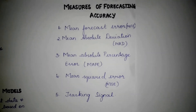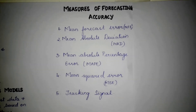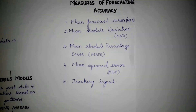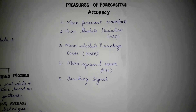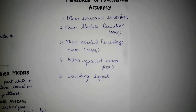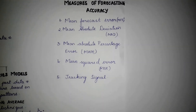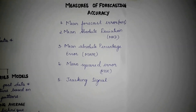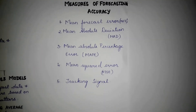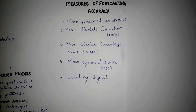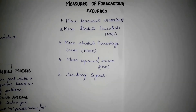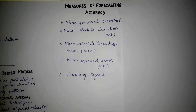Measures of forecasting accuracy. There are five measures of forecasting accuracy. Mean forecast error gives us the deviation of the forecast value from the actual value. Mean absolute deviation calculates the average of all the deviations in a data set. Mean absolute percentage error measures the error as a percentage value of the forecast. Mean squared error calculates the deviations of the forecast, squares them, and takes their average.